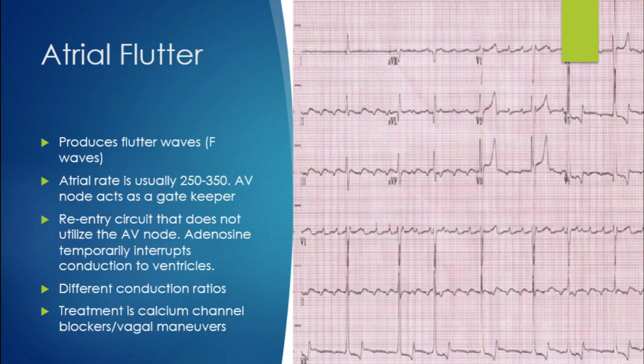Atrial flutter is a re-entry circuit that happens inside the right atrium — the current just keeps going around and around in a circle. The atrial rate is usually 250 to 300 beats per minute. If you see atrial activity at a rate of 300 or more, basically one P wave every one large box, it is going to be flutter — only flutter can do that. Flutter also has different conduction ratios: 1 to 1, 2 to 1, 3 to 1, or a variable one, which makes it irregular.